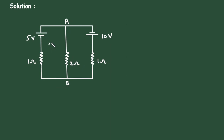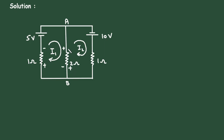First of all, let us assume this is mesh number 1 with current I1 and this is mesh number 2 with current I2. Now according to the direction of current I1, marking the polarities: positive, negative, positive, negative, positive, negative, positive, negative around the mesh. Now let us apply KVL to mesh number 1.